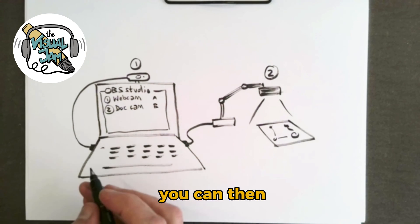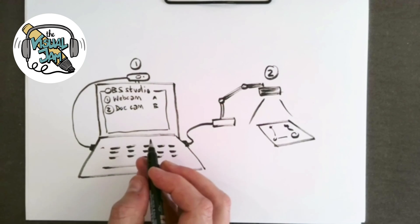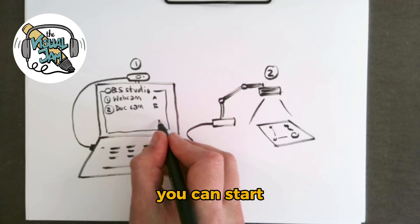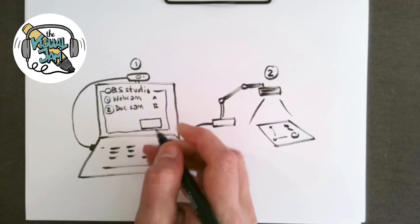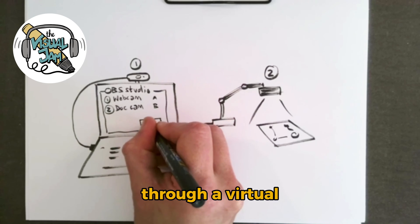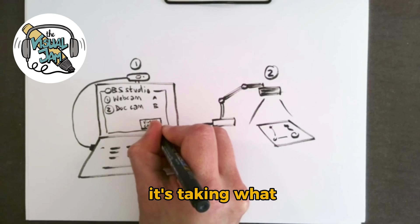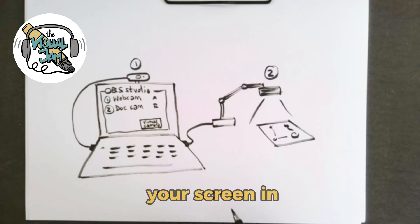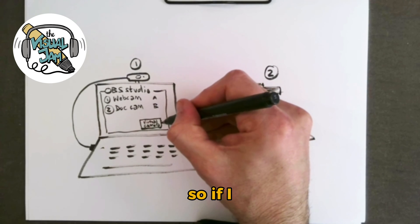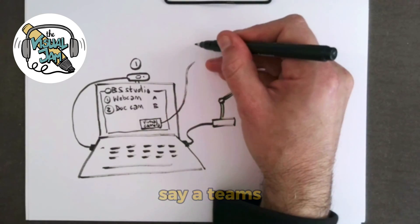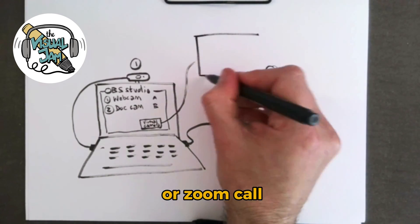In OBS, what you can then do is you can start to stream through a virtual camera. So what that's effectively doing is it's taking what you're seeing on your screen in OBS and it's making that available as a camera source. So if I was to run, say, a Teams or Zoom call.